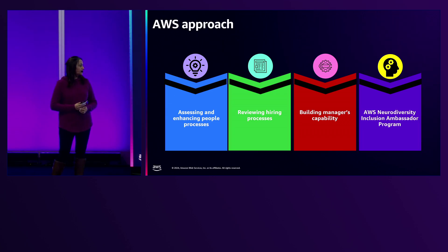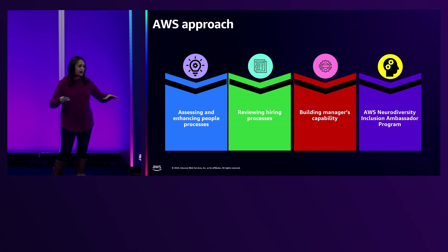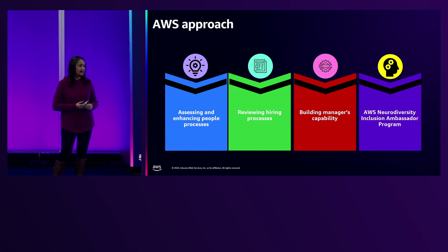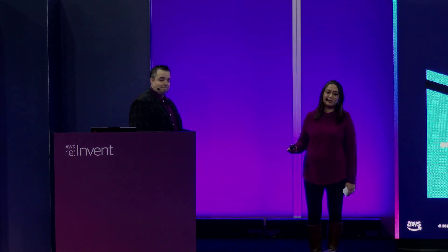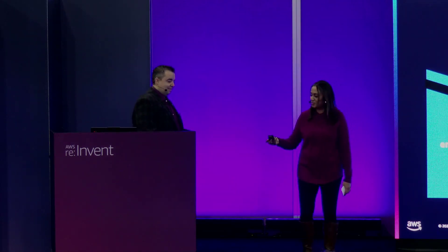We have a community of 18,000 inclusion ambassadors across the globe, who are our eyes and ears on the ground to spread the word and amplify learning, awareness and initiatives around neuro-inclusion. I'll now hand over to Matt for the rest of the presentation. We will both be here once we're done with the talk in case you have any questions. Thank you so much.